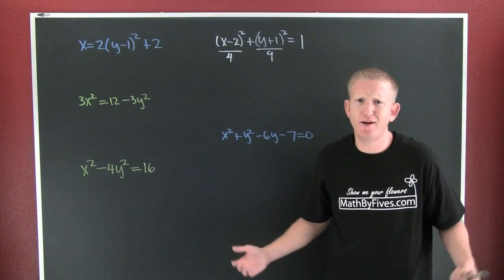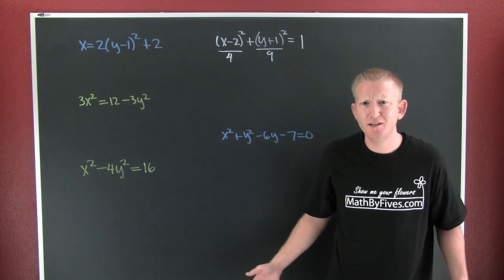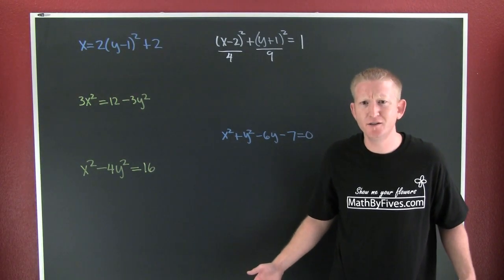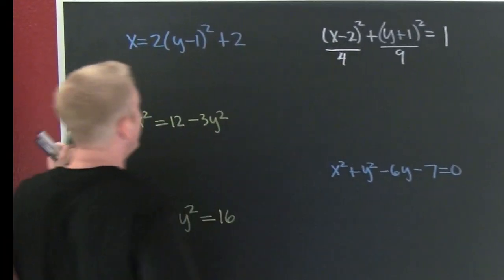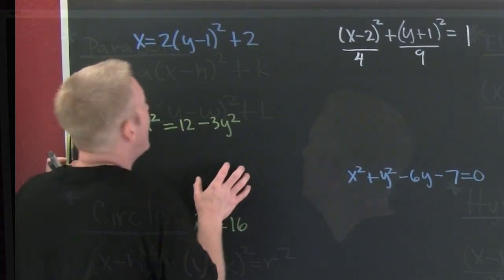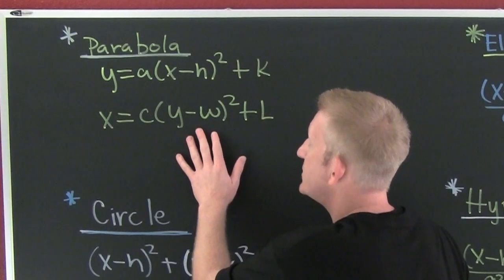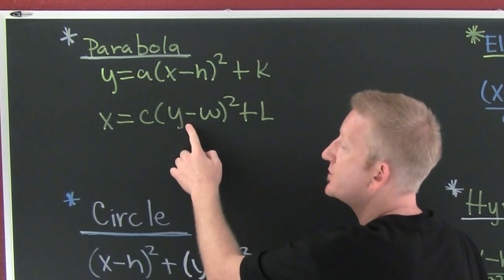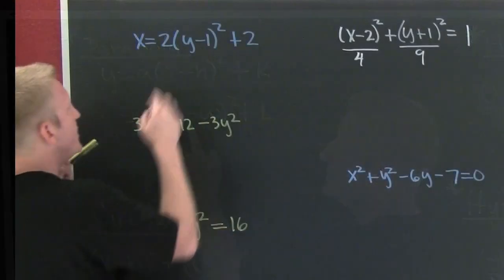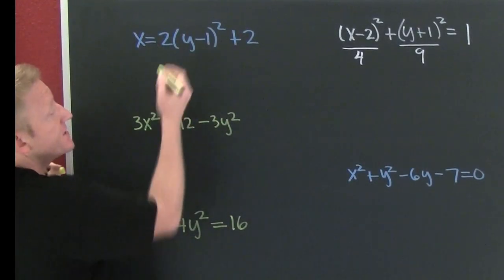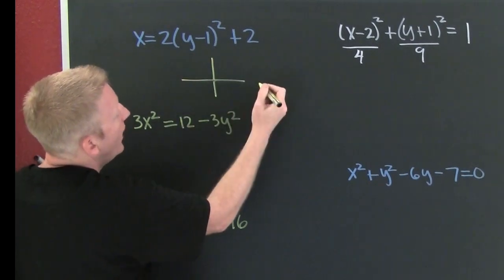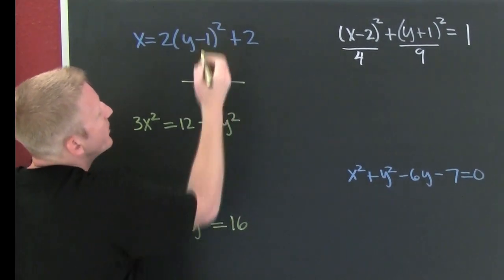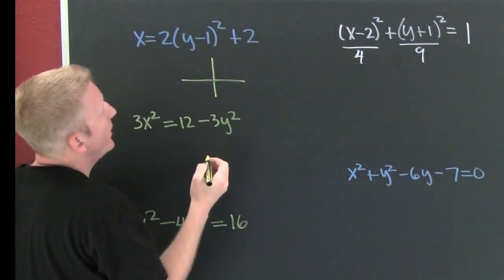Got equations everywhere. What are you gonna do? Let's take a look at this one. Which one is that? The parabola's the one where only one variable is squared. Yes, this is a parabola. Why? Because one of the variables is squared.